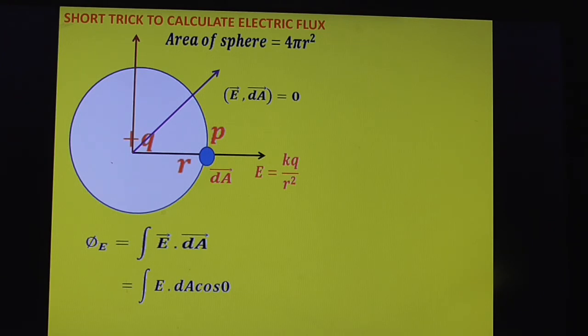Just we are applying A bar dot B bar equals mod A mod B cos theta, angle between A and B for dot product. So here E bar dot dA bar, angle between these two is 0. Therefore magnitude of E bar times magnitude of dA bar times cos 0. So cos 0 value is 1.